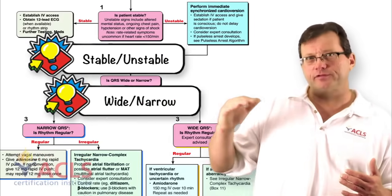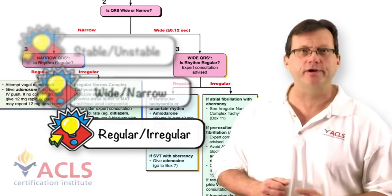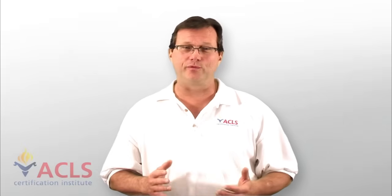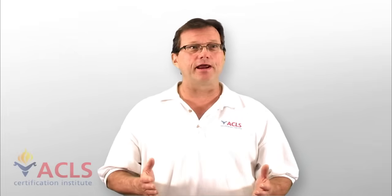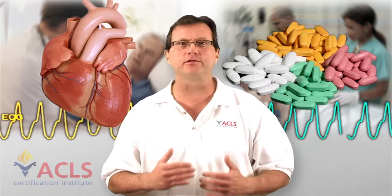Looking at it in this order will help you quickly and more accurately get to the appropriate treatment for this patient. Now in ACLS, we learn about treating rhythms. In the real world, we don't treat rhythms — we treat patients that have rhythms. For example, you could have the same tachycardia in two different patients with completely different etiologies. Same tachycardic rhythm: one caused by a primary cardiac event, the other by a drug reaction or some other cause. So we don't treat rhythms — we treat patients that have rhythms.